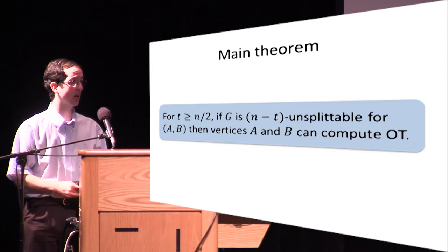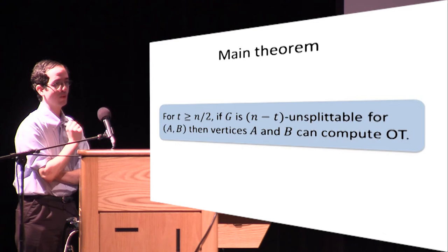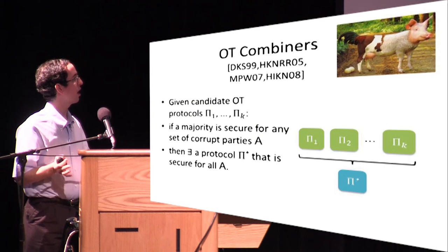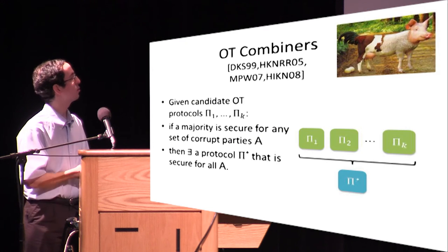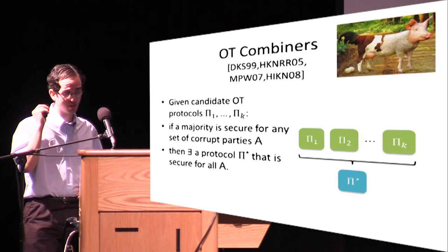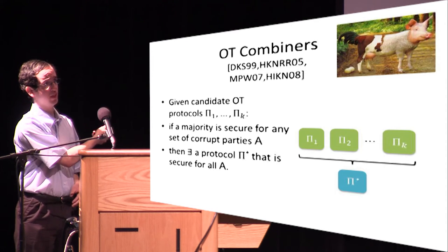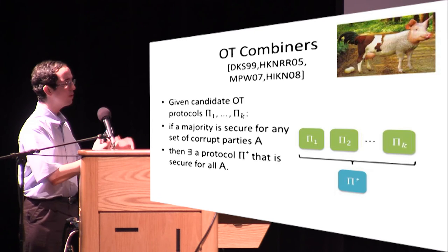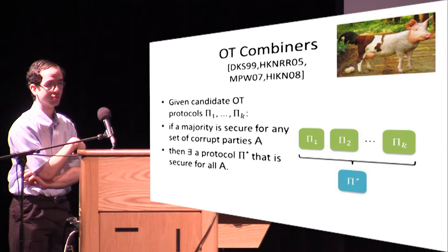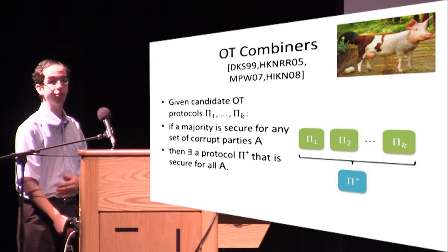Our main result is a matching upper bound: for any graph, if it is N minus T unsplittable, then we can get oblivious transfer between A and B. A key technical tool is OT combiners: if we have k candidate protocols for oblivious transfer where for any set of corrupt parties a majority of the k protocols is secure, we can compile them to obtain a single protocol secure for all sets of corrupt parties. This is a powerful way of taking simple ideas and combining them to get more complicated protocols.